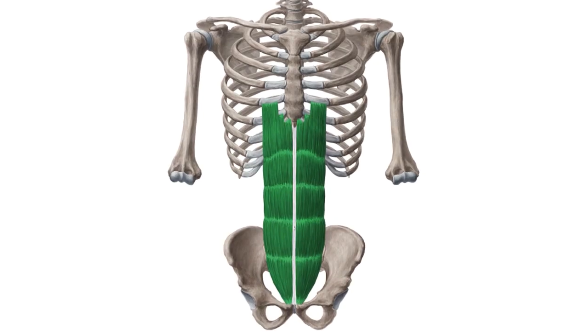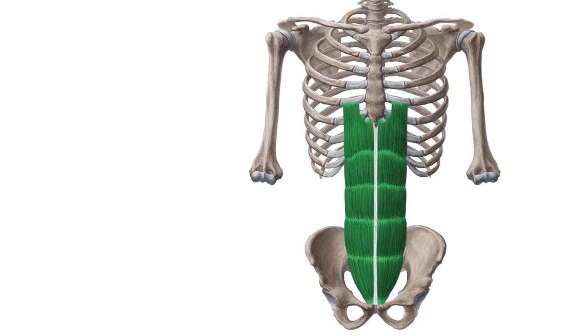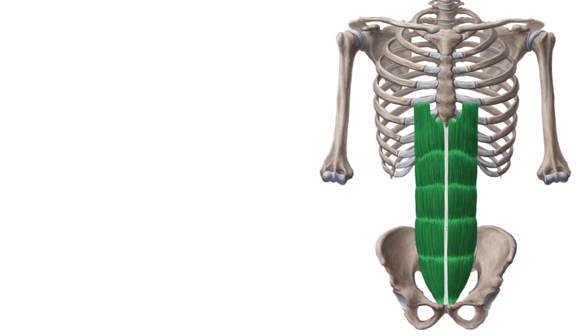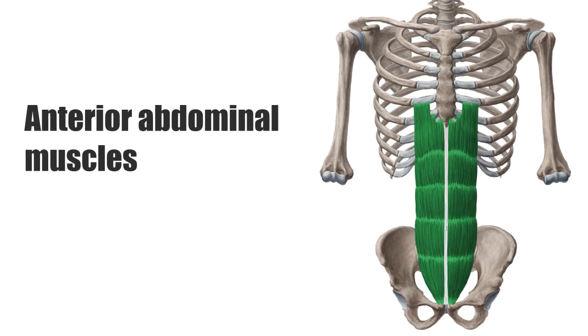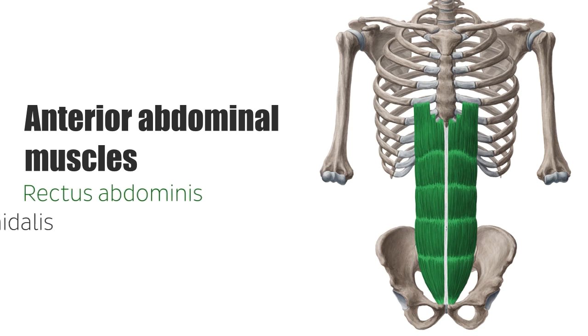Hello again everyone, it's Matt from KenHub and in this tutorial we will discuss the rectus abdominis. The rectus abdominis muscle is a vertically running muscle of the anterior abdominal muscle group. The anterior abdominal muscles are part of the abdominal wall musculature. They tense the anterior abdominal wall together with the lateral abdominal muscles. The anterior abdominal muscles consist of the rectus abdominis muscle and the pyramidalis muscle.